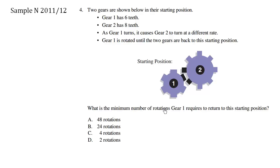What is the minimum number of rotations gear 1 requires to return to this starting position? When we think about it, this gear 1 takes 6 notches to return back to its original position. It takes 6 notches.